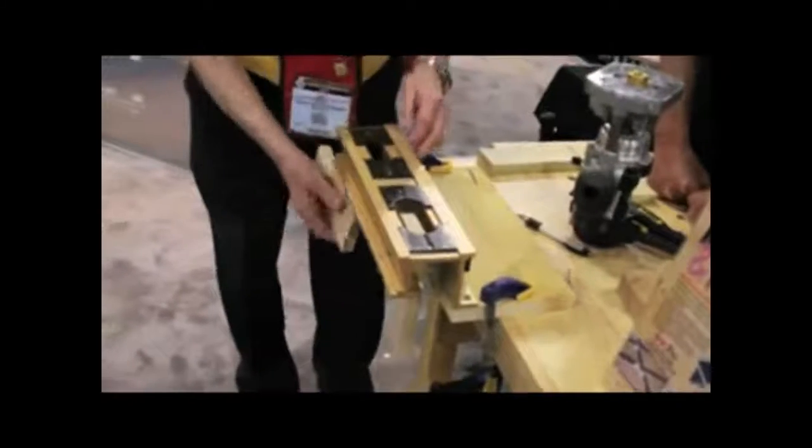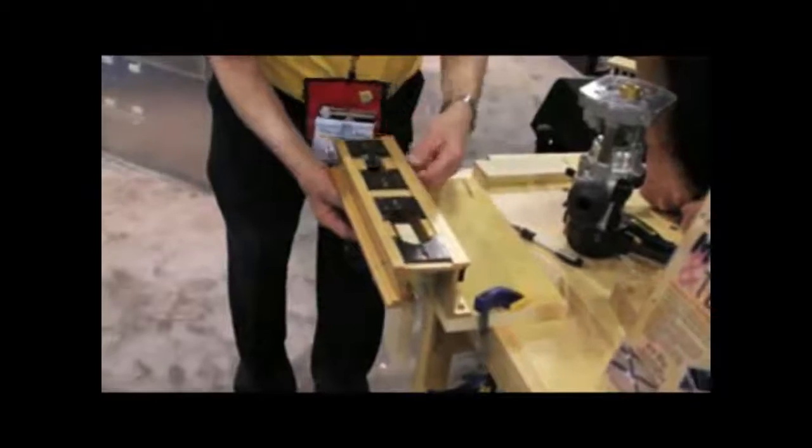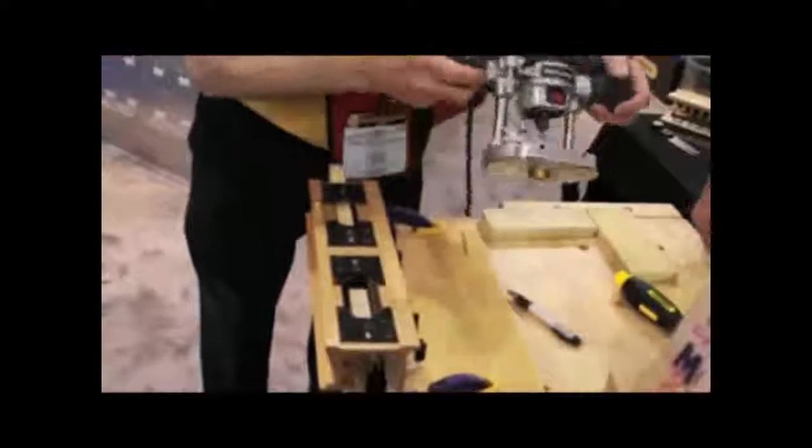Now we put another piece of wood for the mortise in. We do the same operation. Then we're ready to use our plunge router, which I have preset to the depth of the cut.